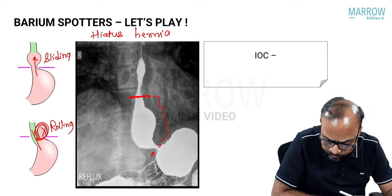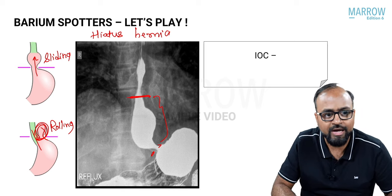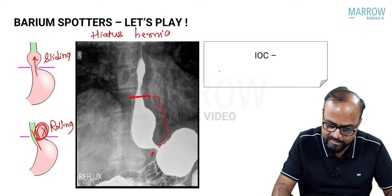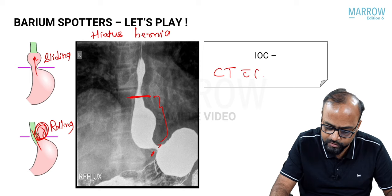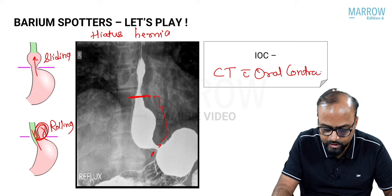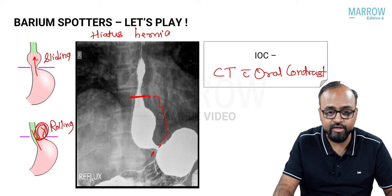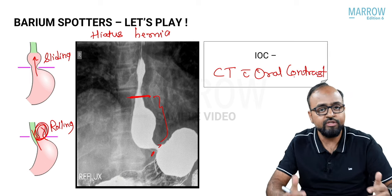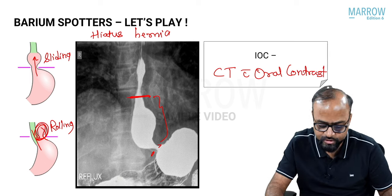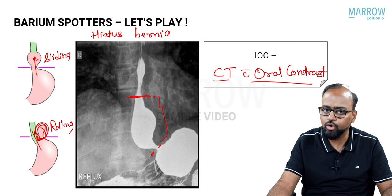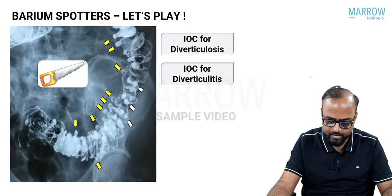The investigation of choice for hiatus hernia is CT with oral contrast. Though barium swallow was initially used for diagnosis, the investigation of choice is now considered to be CT with oral contrast.